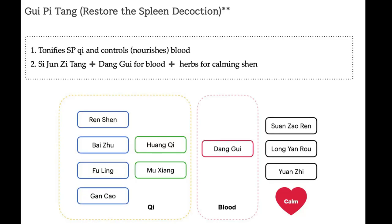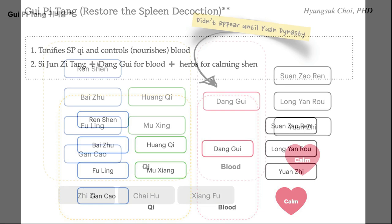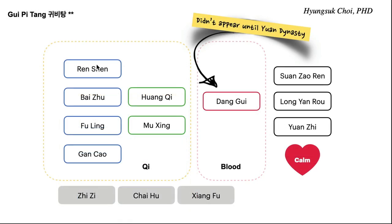Another famous formula from Sijun Tang is Guipi Tang. Guipi Tang has all these members, including Hwangchi and Fuling — two members we already talked about.